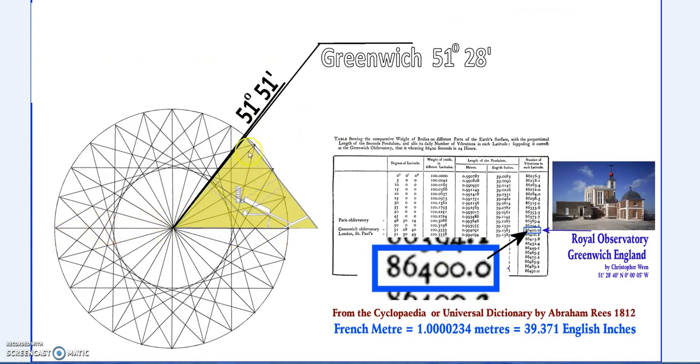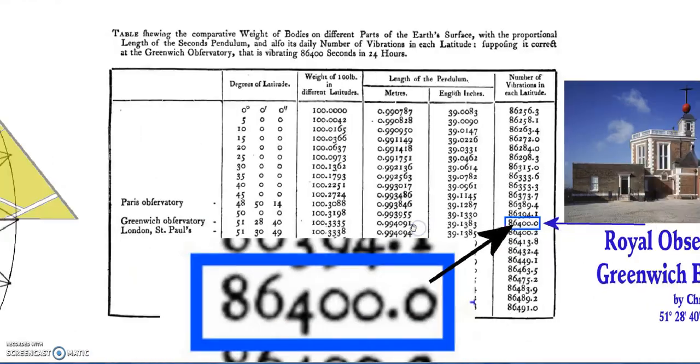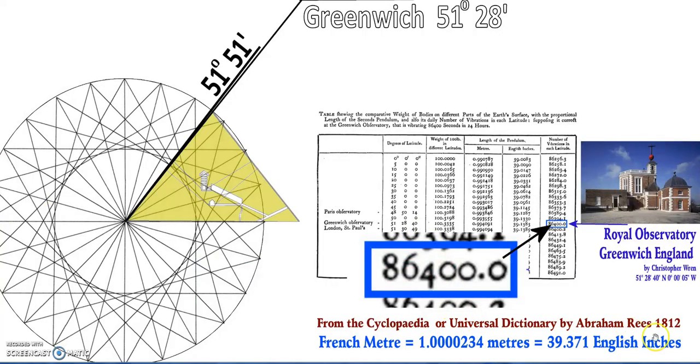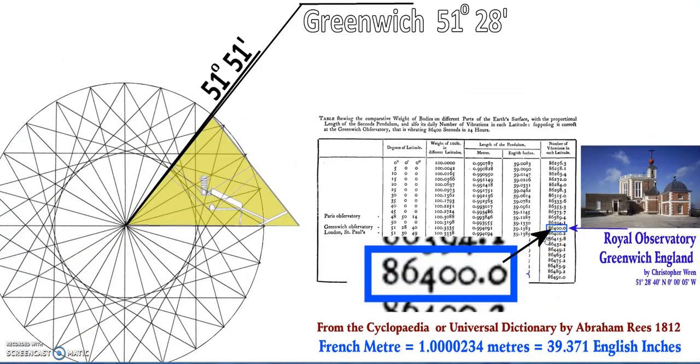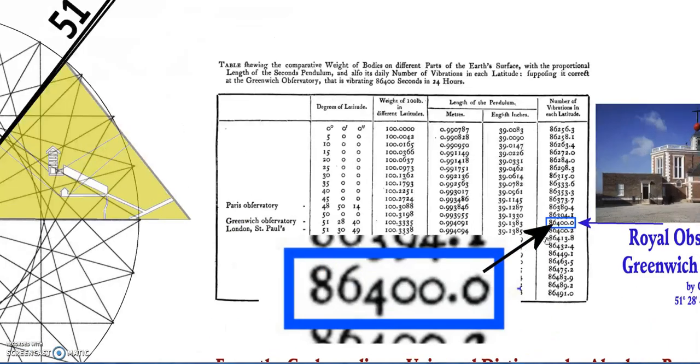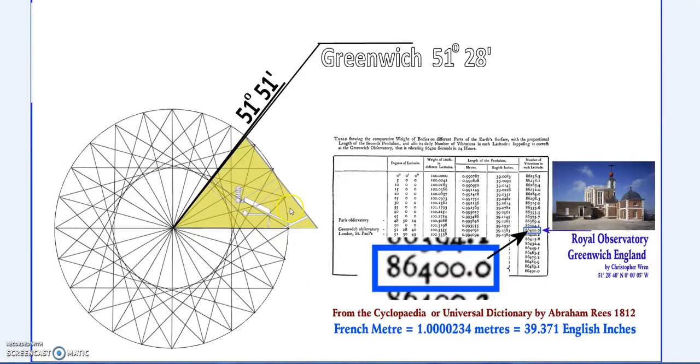It's interesting that the angle of the pyramid is pretty much exact on where Greenwich is. Going back to 1812, the meter was different. At Greenwich, the pendulum being exactly 86,400 seconds per day.